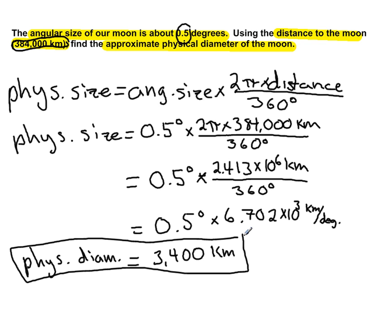It turns out the actual physical diameter of the moon is something like 3,476 kilometers, so we are really close. The reason we didn't get the exact answer is because that angular size of 0.5 degrees is a rough estimate, and that distance to the moon is an average distance—384,000 is also an estimate.